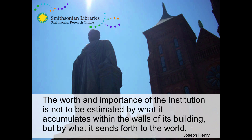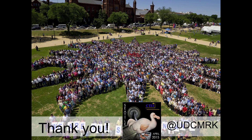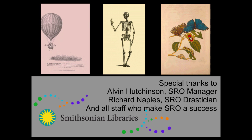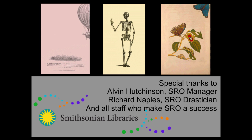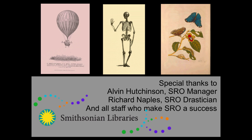As our first secretary Joseph Henry noted, it's not really the stuff you keep inside the walls of your institution that makes it important. At the Smithsonian, where we have 137 million objects in our collection, we have a lot of important stuff — but it's how we actually get that information and content out to the greater world that defines the importance of the institution. On behalf of all the Smithsonian staff, thank you for your time. Special thanks to my staff Alvin Hutchinson and Richard Naples, as well as the rest of the Smithsonian staff who have worked on Smithsonian Research Online over the last number of years.